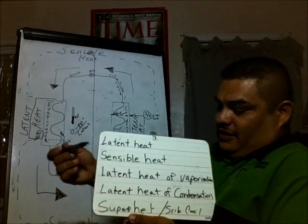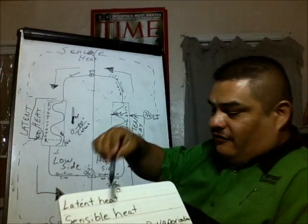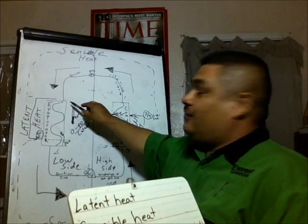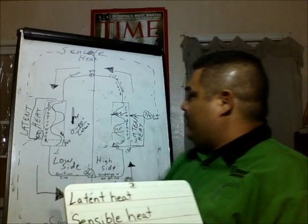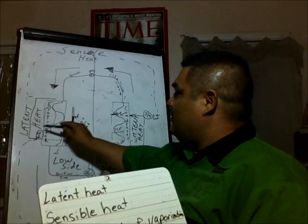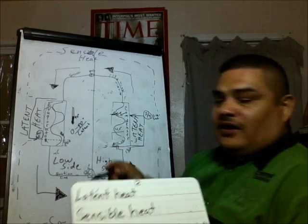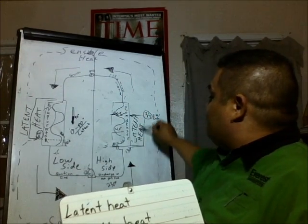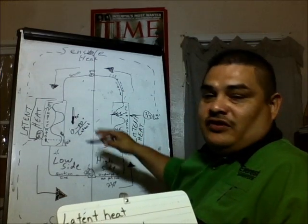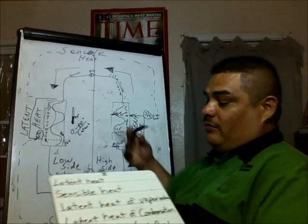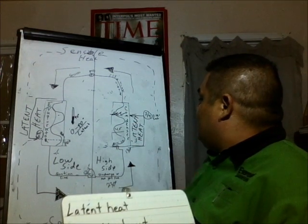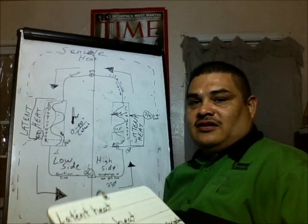Latent heat of vaporization — very simple to understand. Latent heat of vaporization happens in the evaporator. The evaporator has the word 'vapor' in it — it's the hidden heat during the vaporization. Latent heat of condensation is the corresponding part in the condenser — it's heat removed or added before the point of saturation. So latent heat of vaporization is in the evaporator, and latent heat of condensation is in the condenser. Everything else is sensible heat.